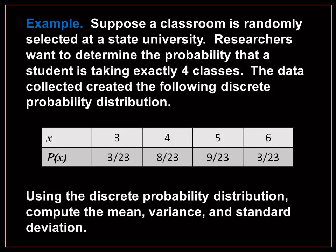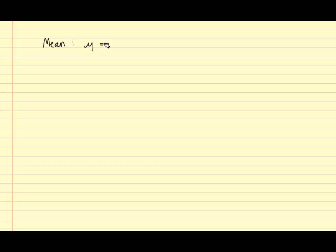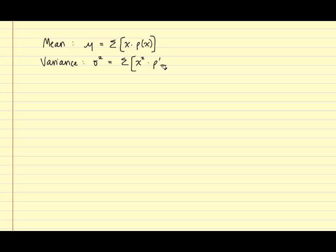Using the discrete probability distribution, compute the mean, variance, and standard deviation. To compute them, we use the following formulas. The mean, also known as the expected value, is represented as mu, and that is equal to the sum of each x value times its corresponding probability. The variance, represented as sigma squared, is equal to the sum of the x squared values times their corresponding probability, minus the mean squared. The standard deviation, sigma, is found by taking the square root of the variance.